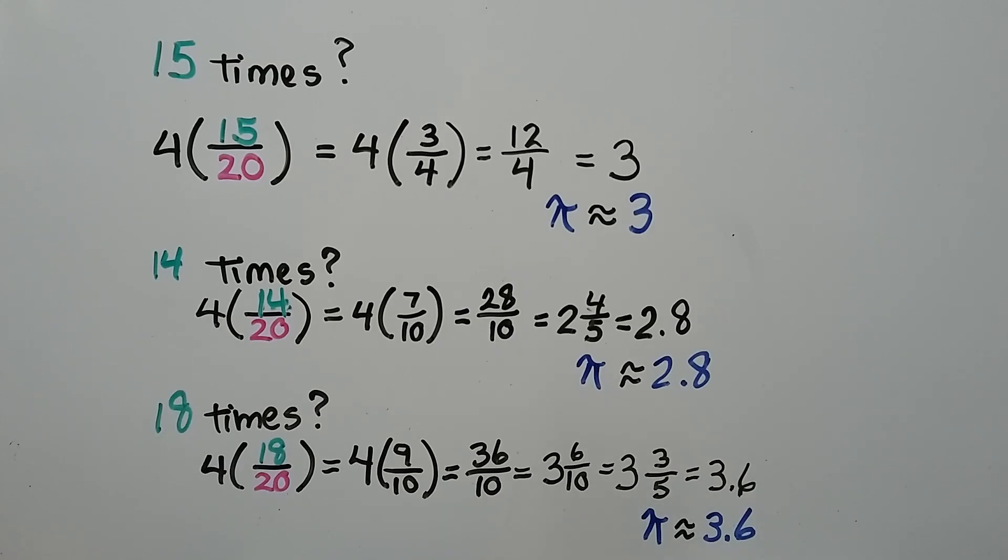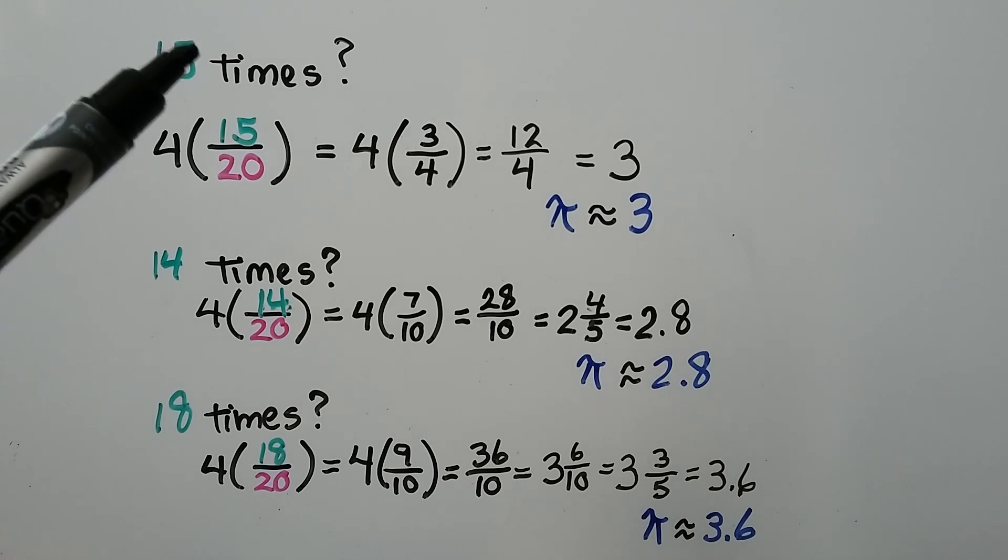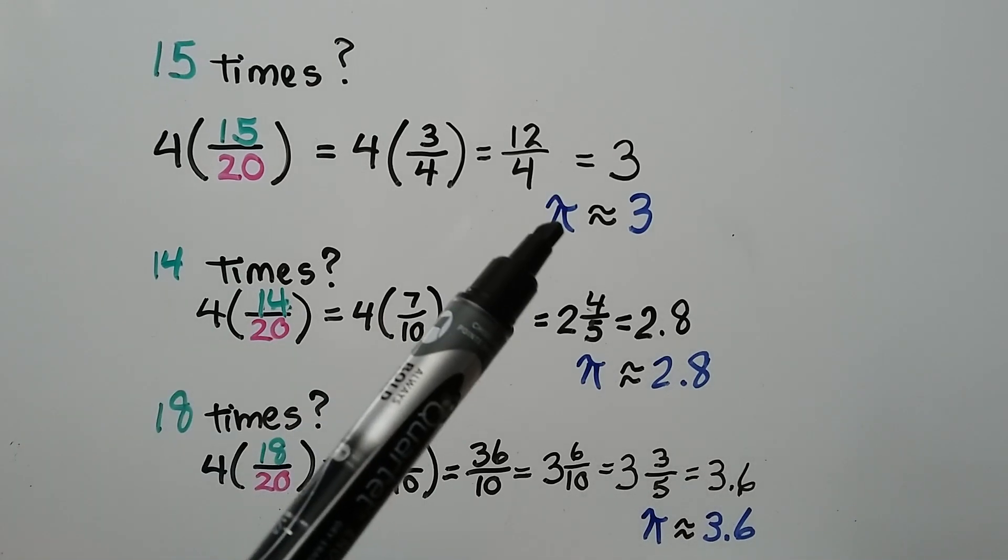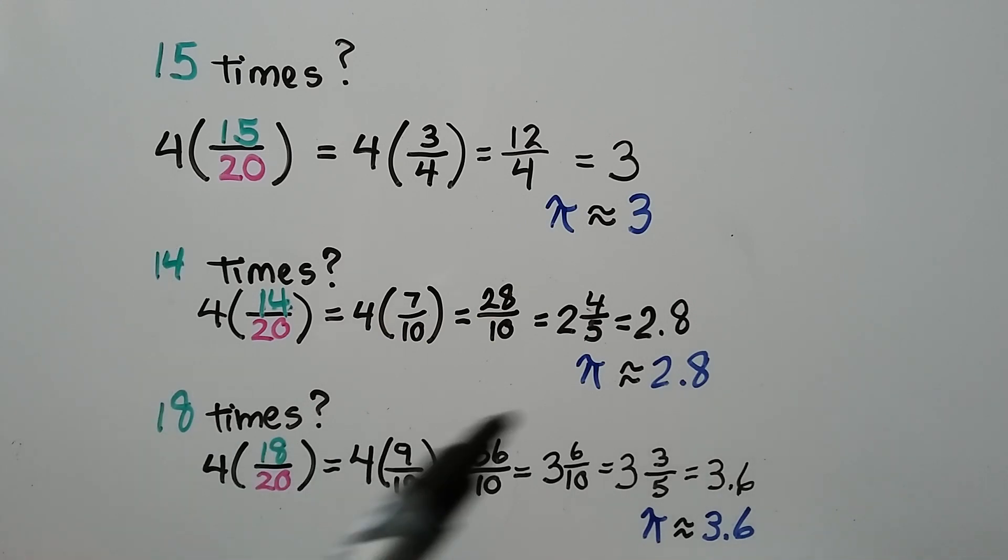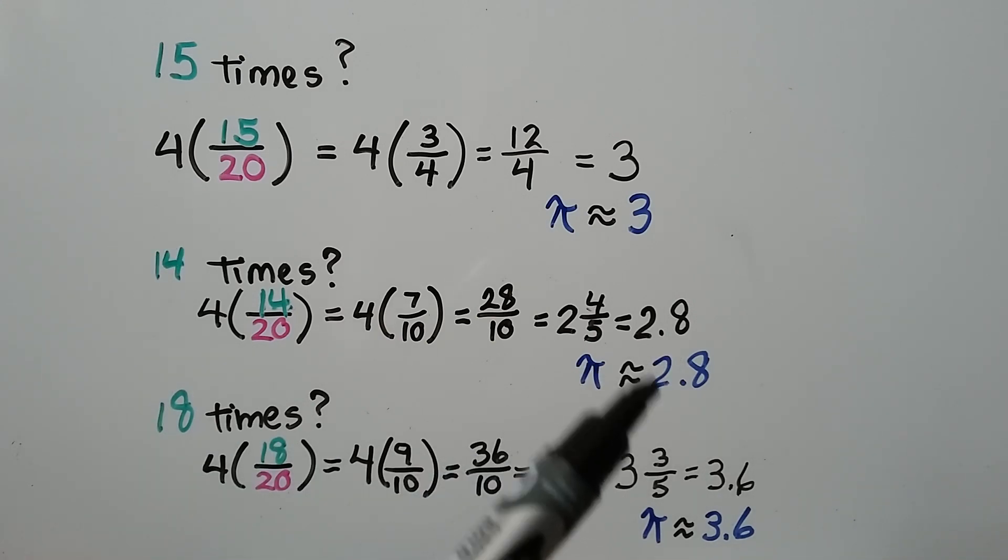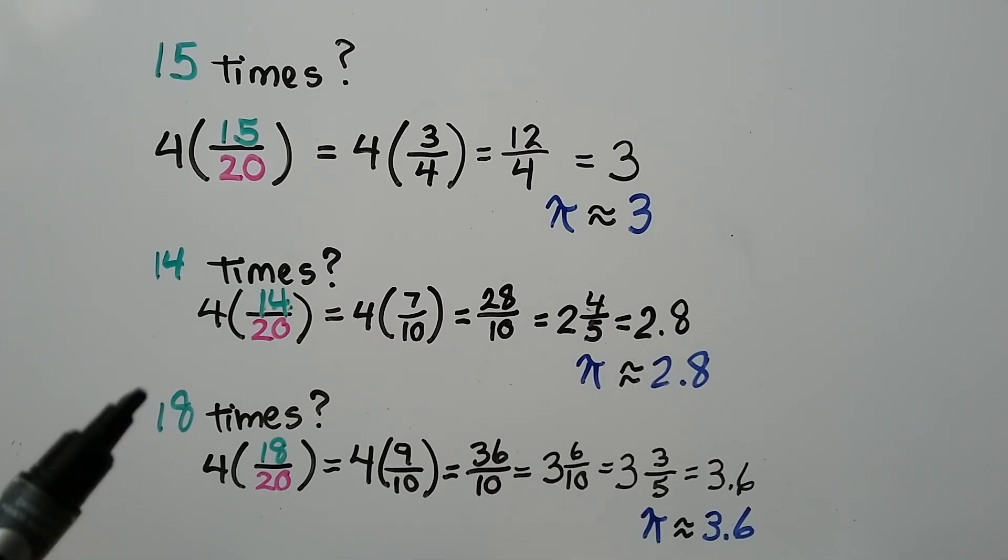If it landed touching or covering an intersection fifteen times, we'd get approximately three for pi. Fourteen times out of the twenty, we'd get approximately two point eight. That's getting a little far away from its actual approximate value. If we did it eighteen times out of twenty, it would be approximately three point six.